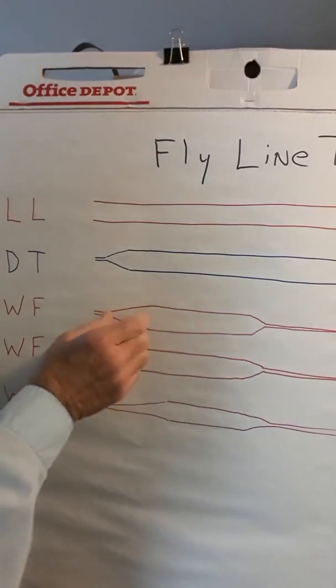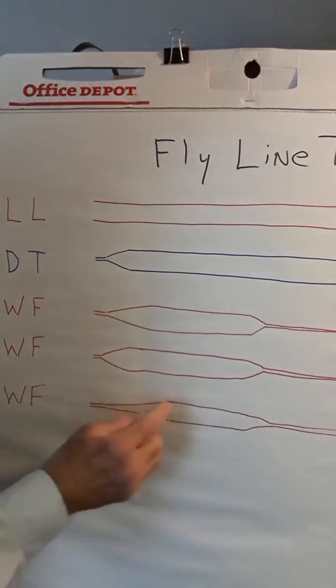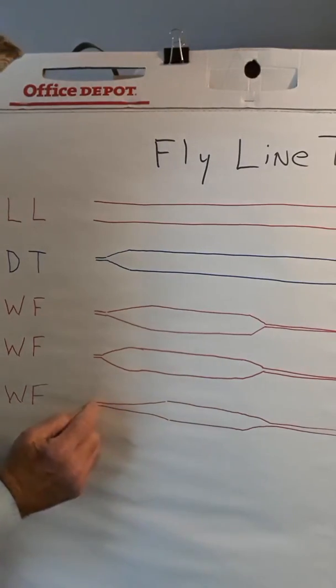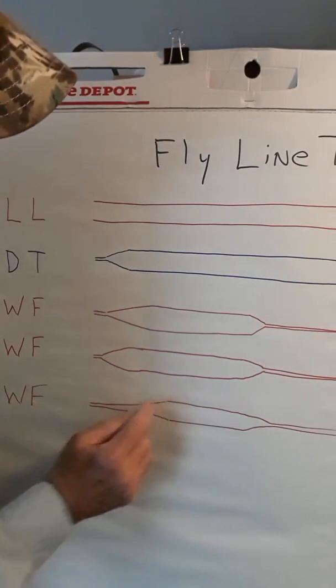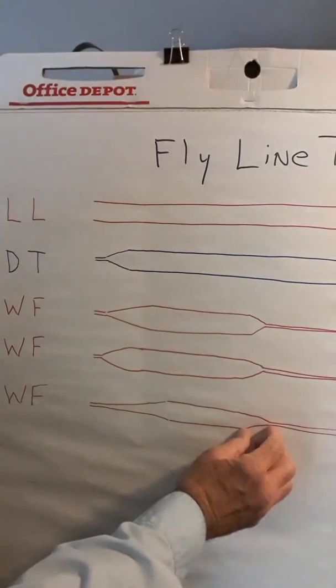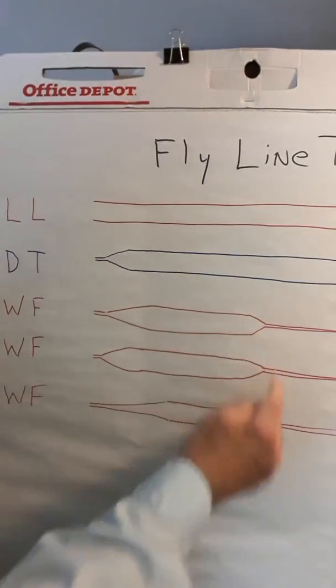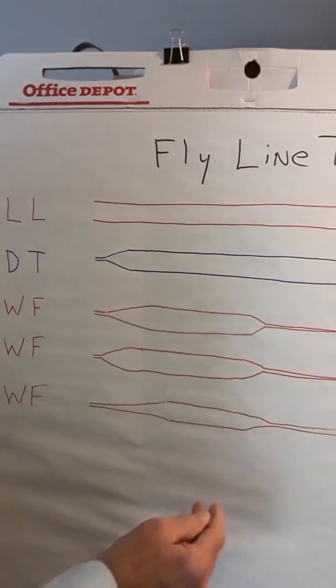You'll notice on this weight forward line, it has a very long front taper, a shorter belly, and it can have any length of rear taper, again, just like these can, any length of rear taper.